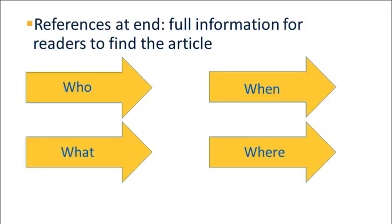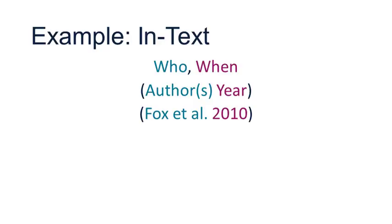The citations in the reference list follow a general format of who, when, what, and where. Here's an example of a CSE citation for a primary research article. For the in-text reference, the format is who, when.